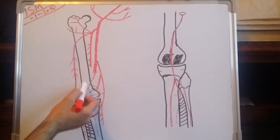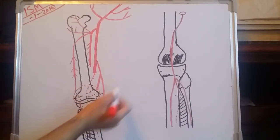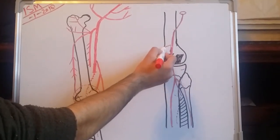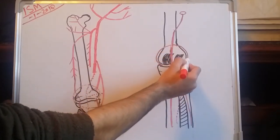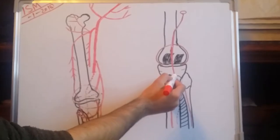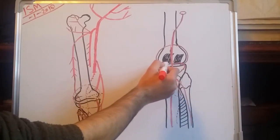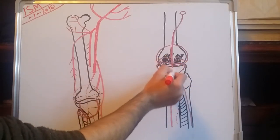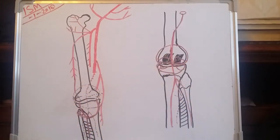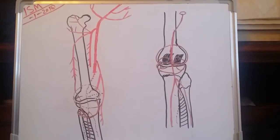The popliteal artery gives two branches from the upper side — the first one and the second one — and from the lower side, two more. They form anastomosis and provide blood supply to the patella, so it may be called as patellar anastomosis. Now I will write their names according to their positions.